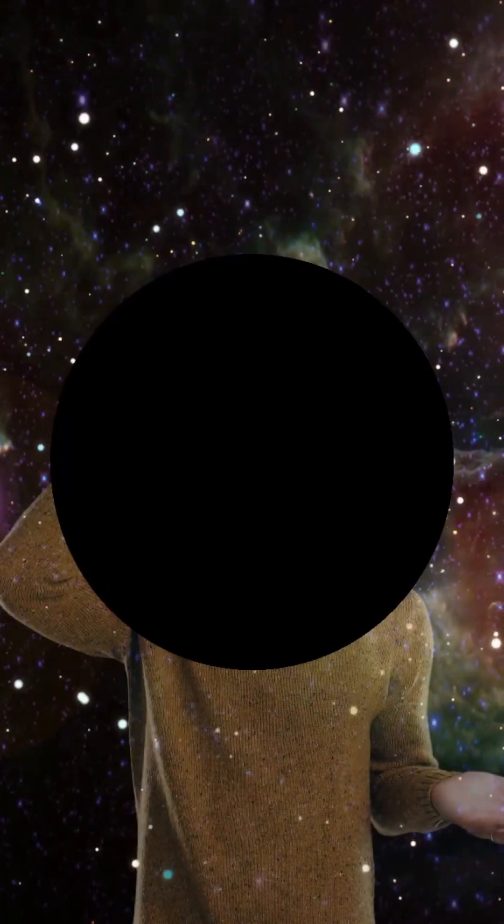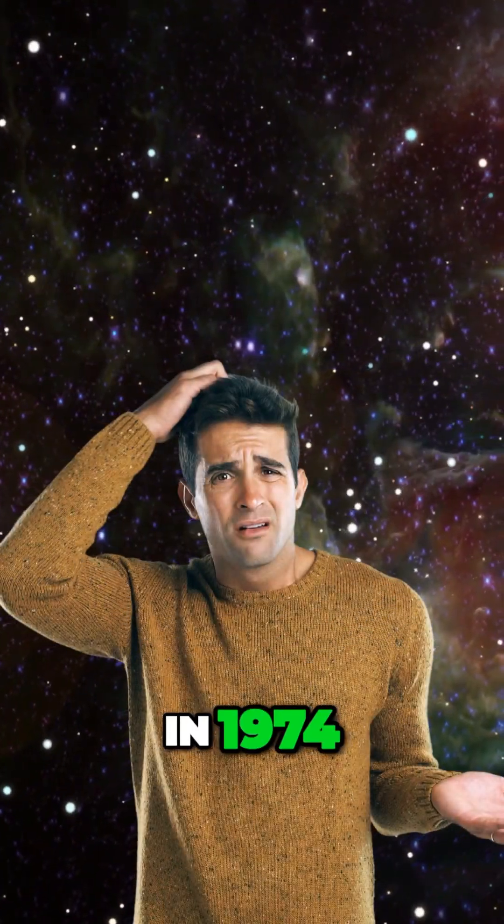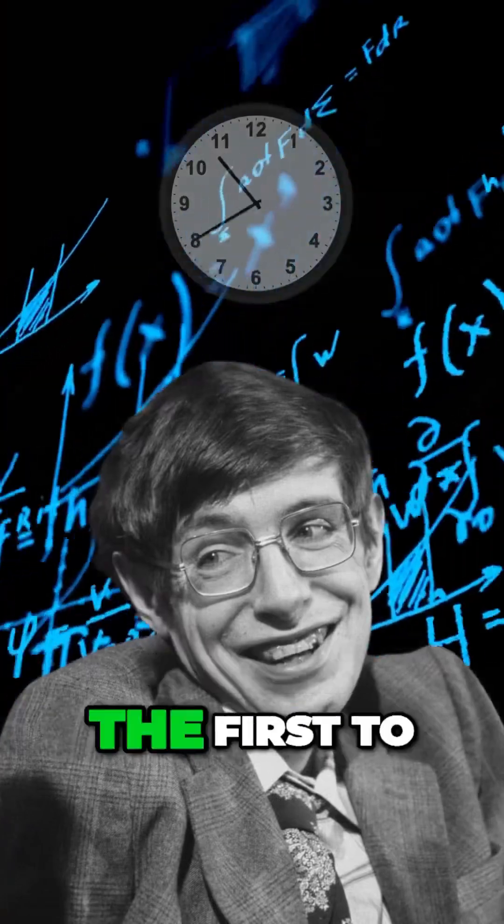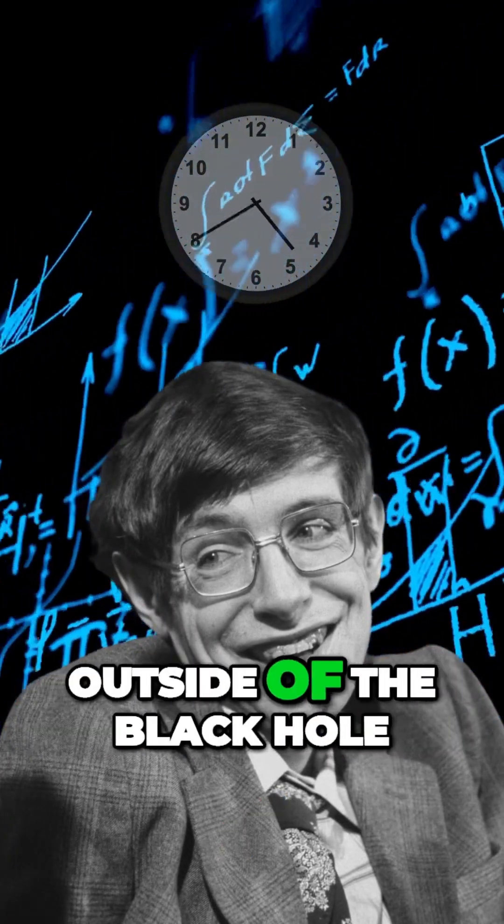So how can a black hole disappear? Well, in 1974, Stephen Hawking was the first to apply quantum mechanics to the space just outside of the black hole.